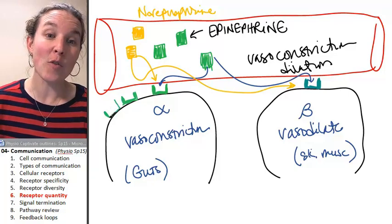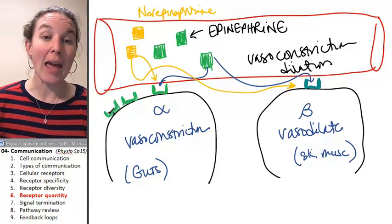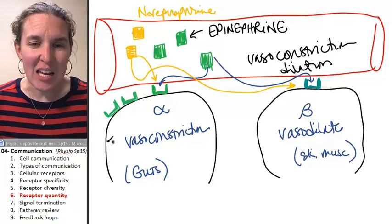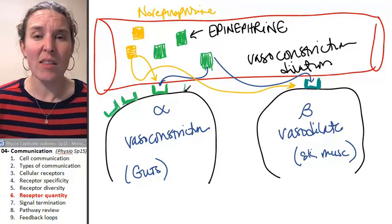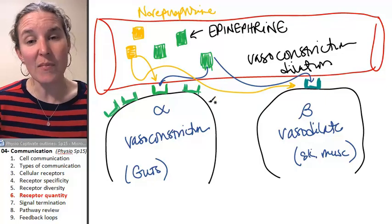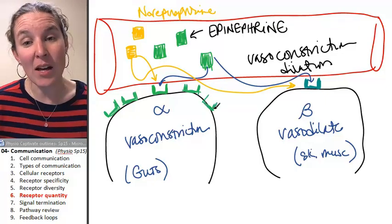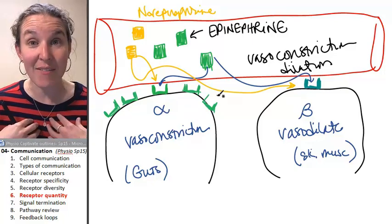And if, for example, we did drugs and just flooded the cell with this communicating chemical, the cell might respond by increasing the number of receptors that it has to receive that information.